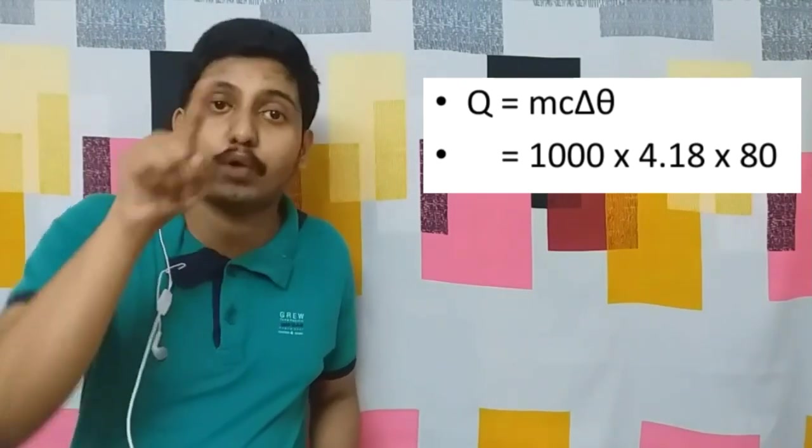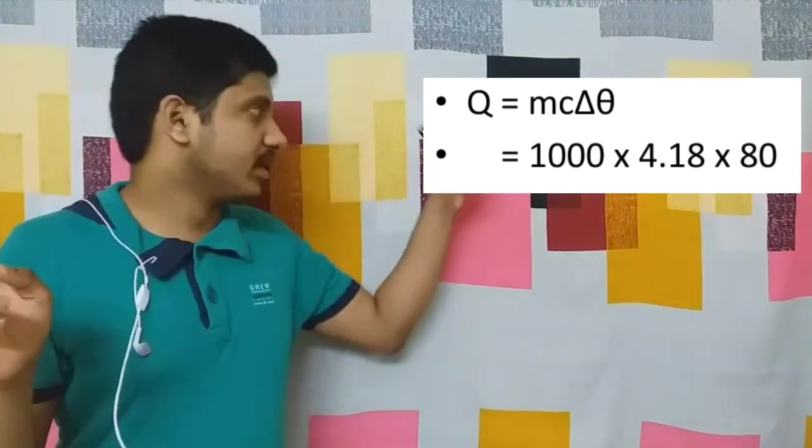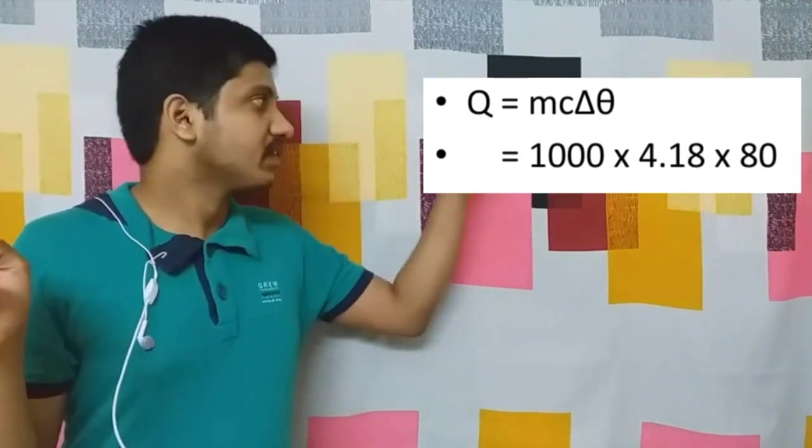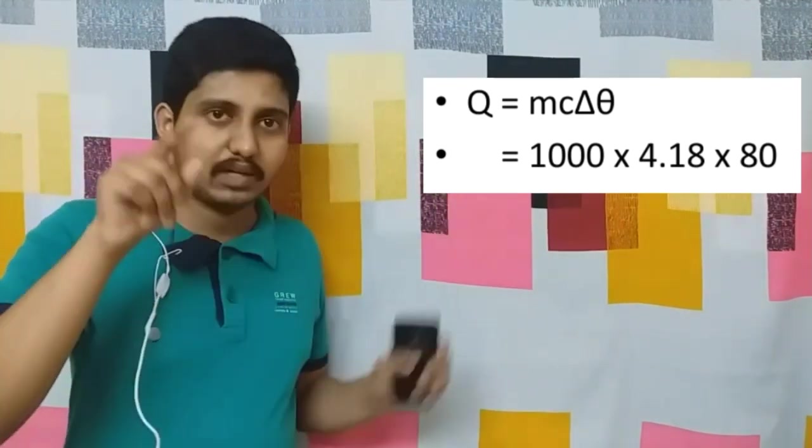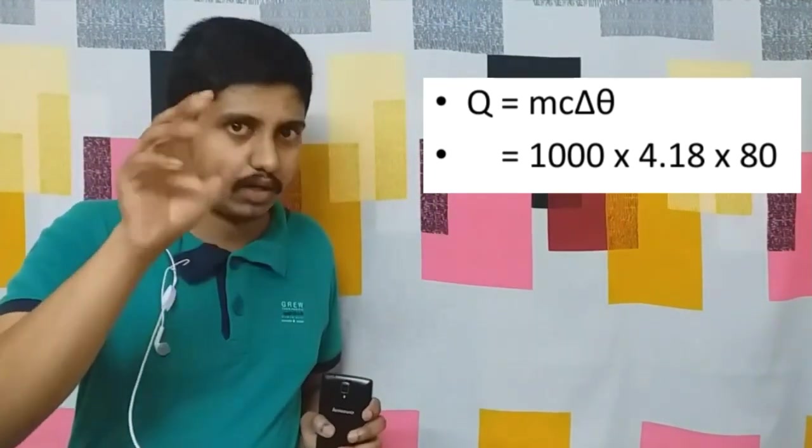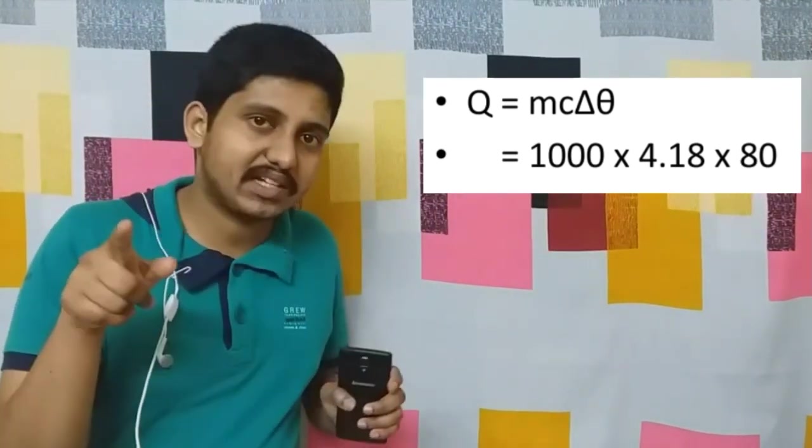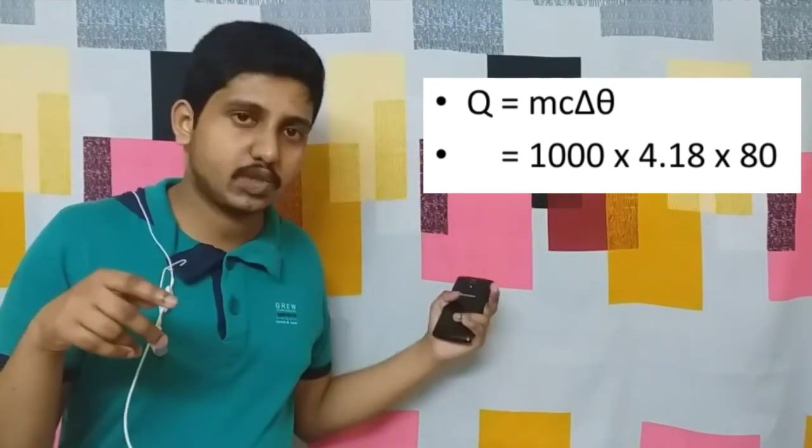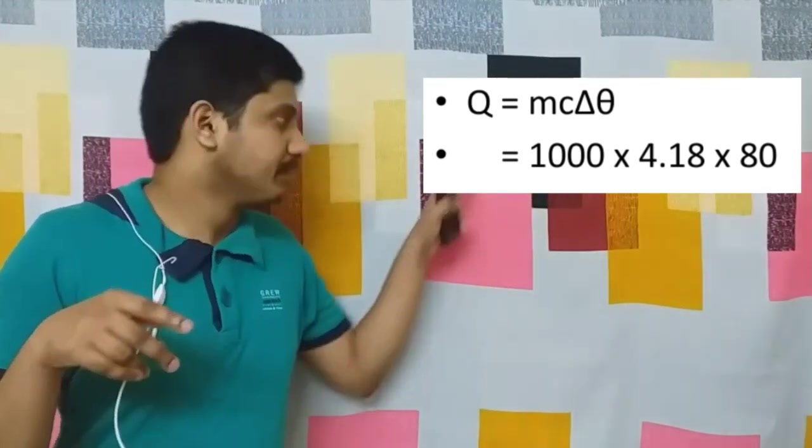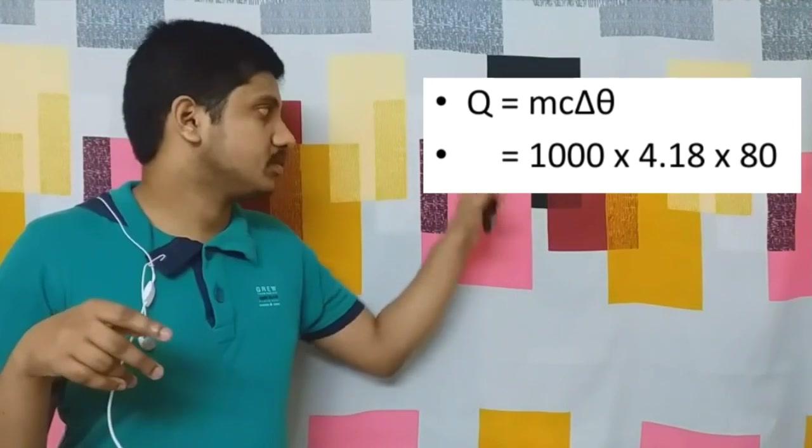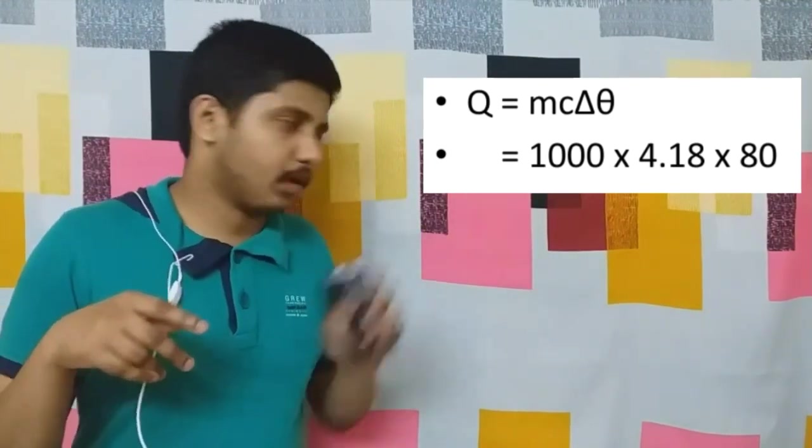So we have Q = 1000 grams × 4.18 × Δθ. What is Δθ? 100 minus 20, which is 80. So we have 1000 × 4.18 × 80.